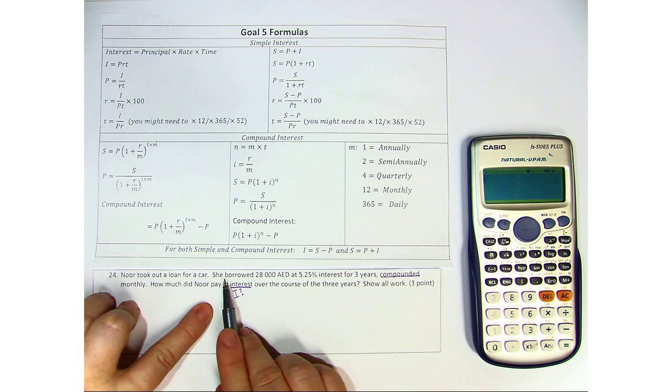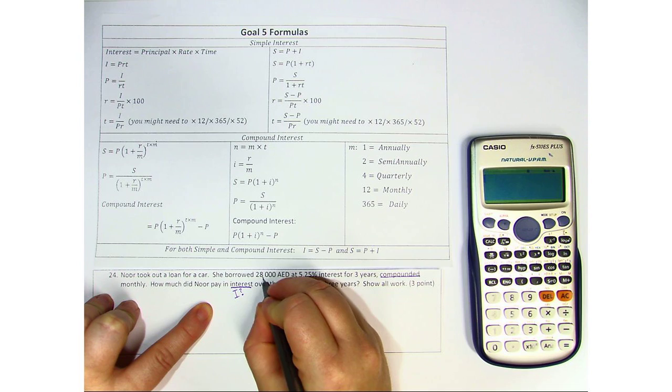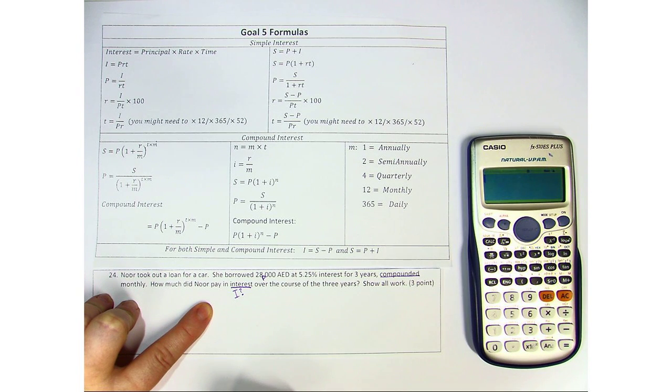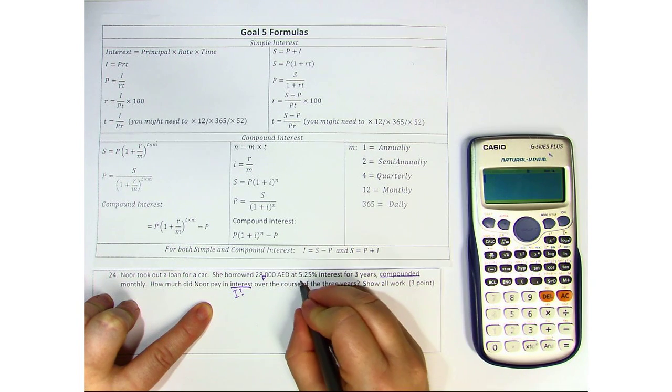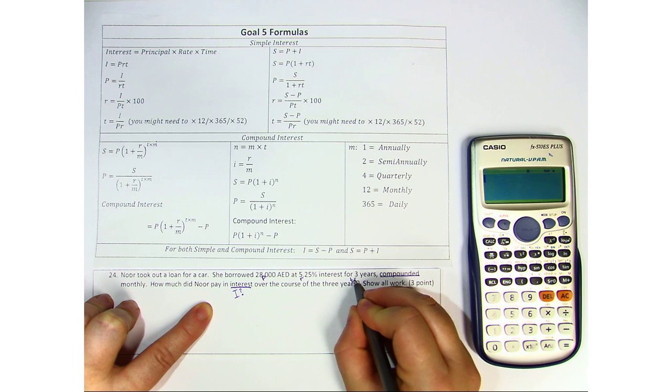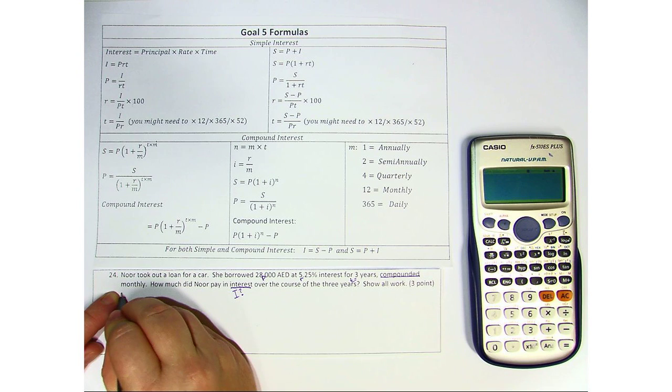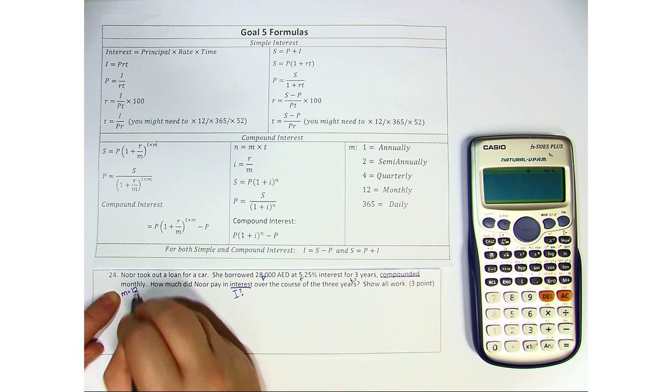Noor took out a loan for a car. She borrowed 28,000. So because she borrowed 28,000, that would be our principal. At 5.25% is our rate for three years. So my time is three, compounded monthly. So monthly means it was compounded 12 times a year.